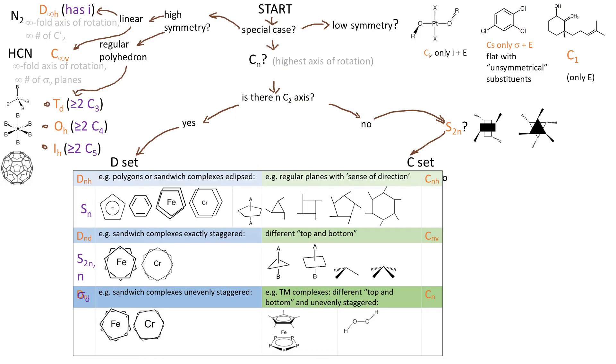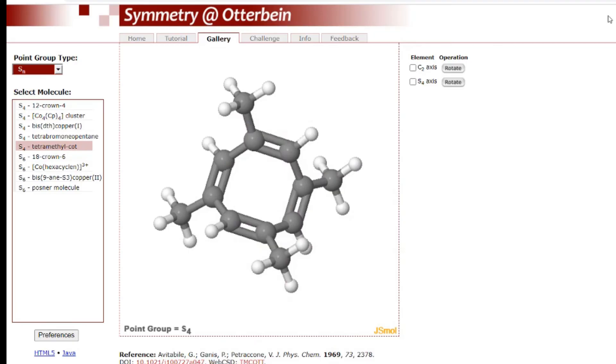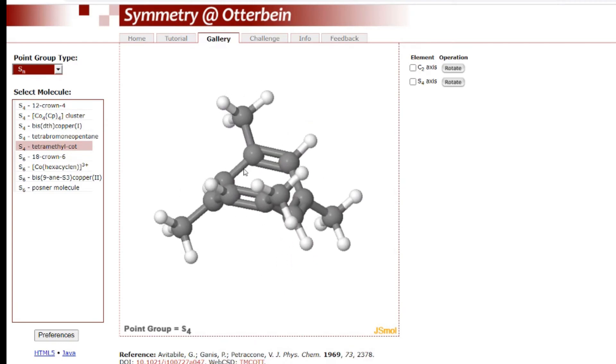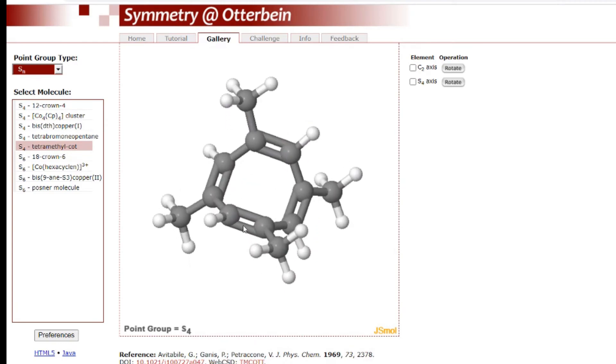Now let's say there is no N C2 axes, so the next question is: is there S2N? So here we have some common generic shapes of molecules that belong to S2N. So there is some top and some bottom part and also some directionality and that's what the spikes represent. So tetramethyl COD exactly matches with this description.